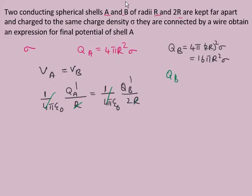Simplifying, we get QB' = 2QA'. This is one relation connecting the redistributed charges. Our final aim is to find the value of VA, so we need to determine QA'.